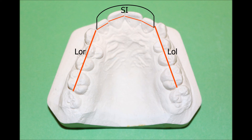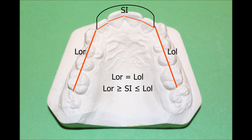Gerlach found that lateral segments of upper and lower jaws should be equal to each other in orthognathic occlusion, and the length of the frontal segment should be the same or less than the length of the lateral segment.